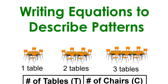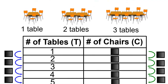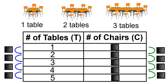Writing equations to describe patterns. In this example, we're going to compare the number of tables, T, to the number of chairs, C. The number of tables will be our X, and the number of chairs will be our Y.